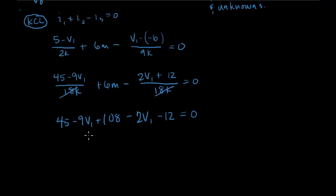So we'll collect our terms. 108 plus 45 minus 12, we get 141. And then minus 9 minus 12 equals 11. So negative 11, but we'll move it over to the other side. 11V1. So V1 then equals 141 divided by 11 which is 12.82 volts.